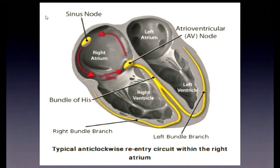The actual pathophysiologic mechanism involves the cavo-tricuspid isthmus. Those squiggly lines represent an area that normally should not conduct, but in patients with atrial flutter it allows bidirectional conduction — lateral to medial as well as medial to lateral. The technique is to put catheters up through the inferior vena cava, find this spot, and ablate it so there's no more conduction across the zone.